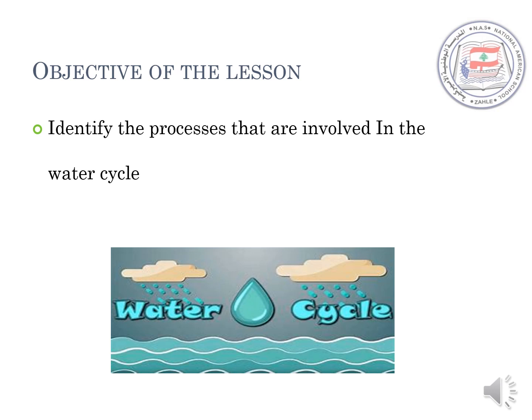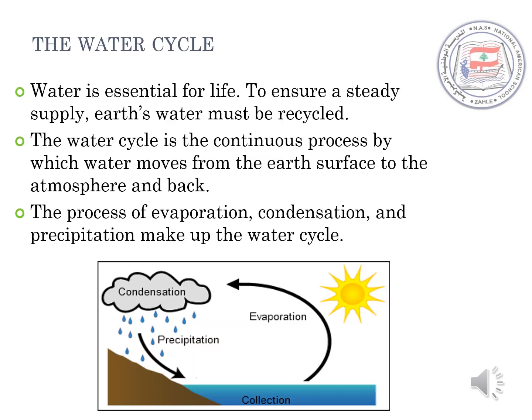The objective of the lesson: In this lesson, we are going to identify the processes that are involved in the water cycle. As we all know, water is essential for life. To ensure a steady supply, Earth's water must be recycled. The water cycle is the continuous process by which water moves from the Earth's surface to the atmosphere and then back to the Earth's surface. The processes of evaporation, condensation, and precipitation make up the water cycle.